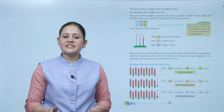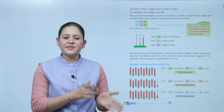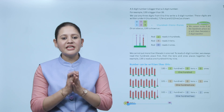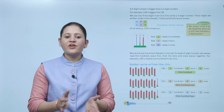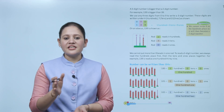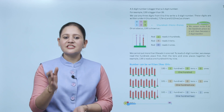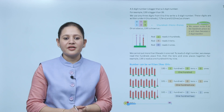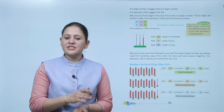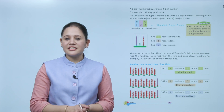A three-digit number is bigger than a two-digit number because it has more digits. For example, 139 is greater than 39 because 139 is a three-digit number and 39 is a two-digit number. We use any three digits from zero to nine to write a three-digit number.